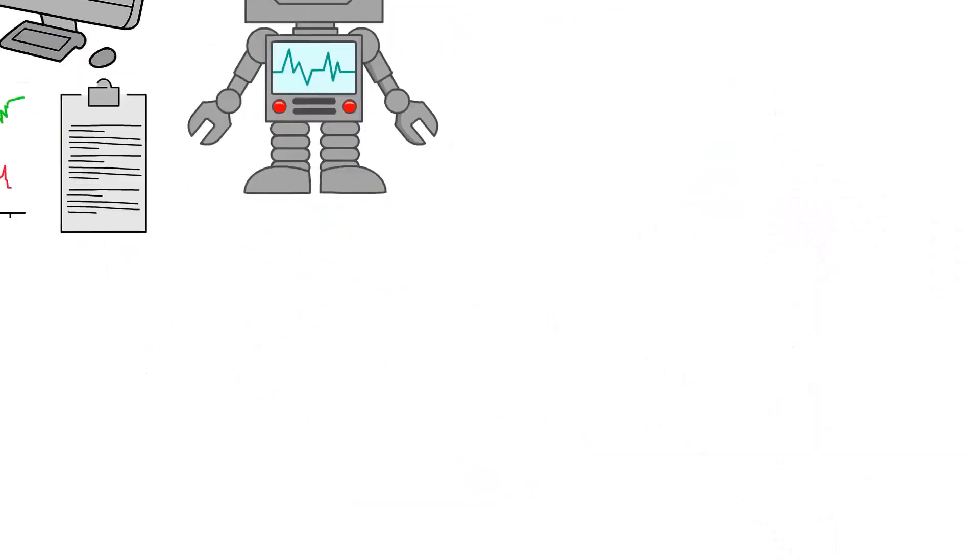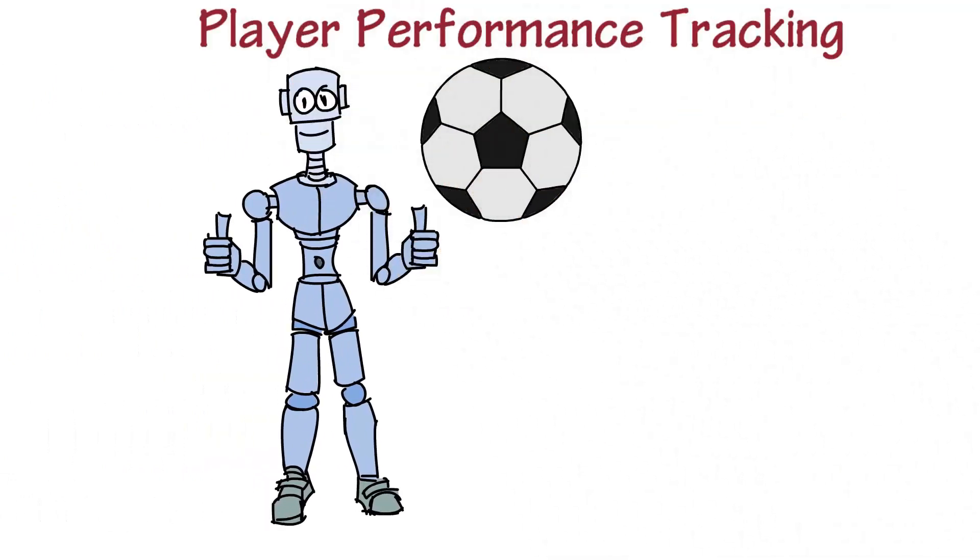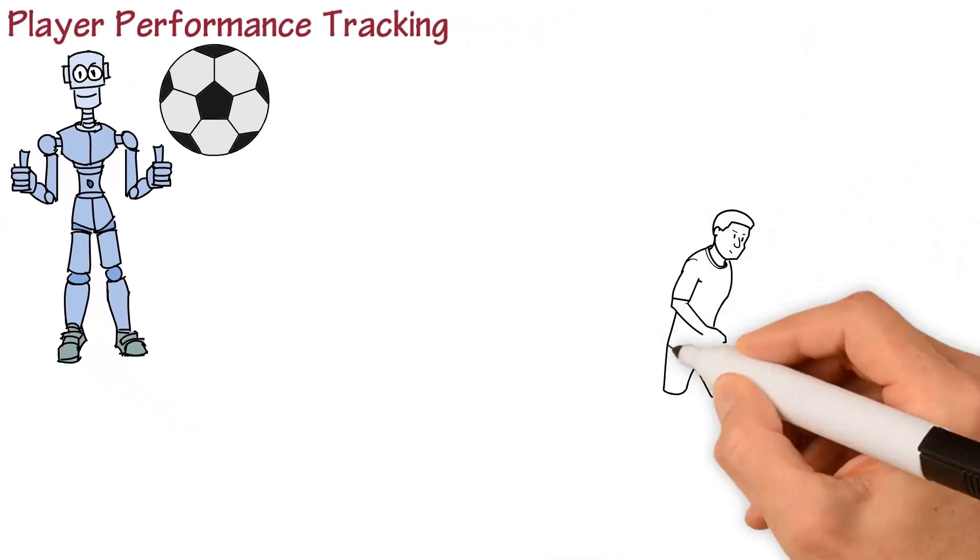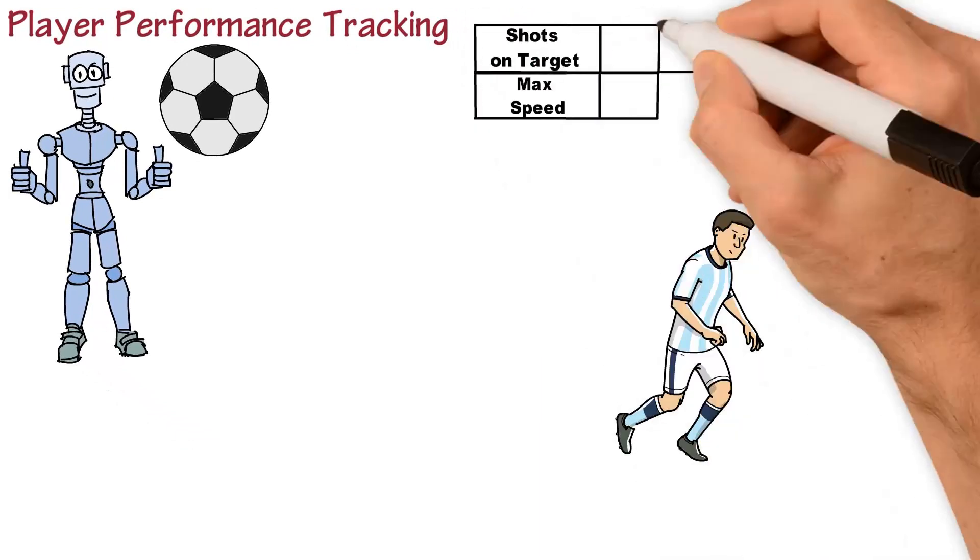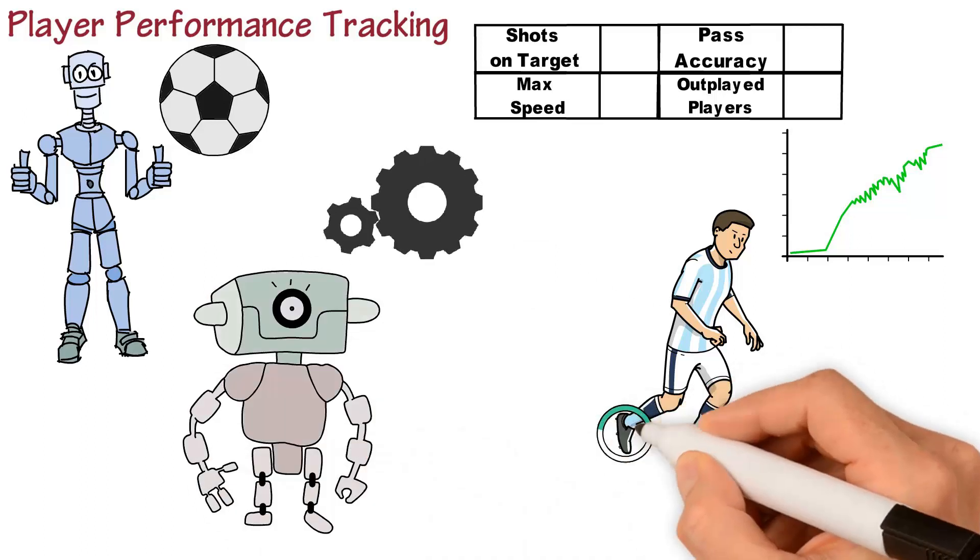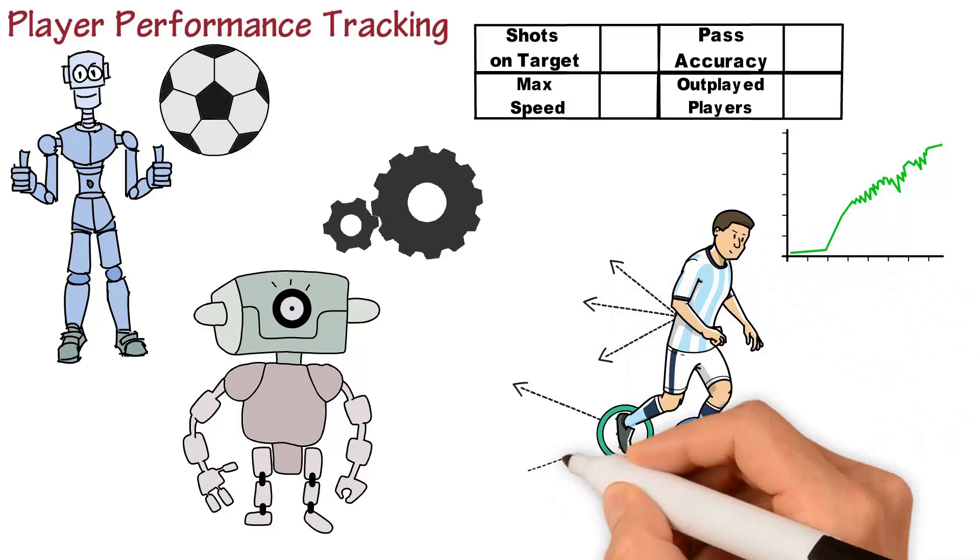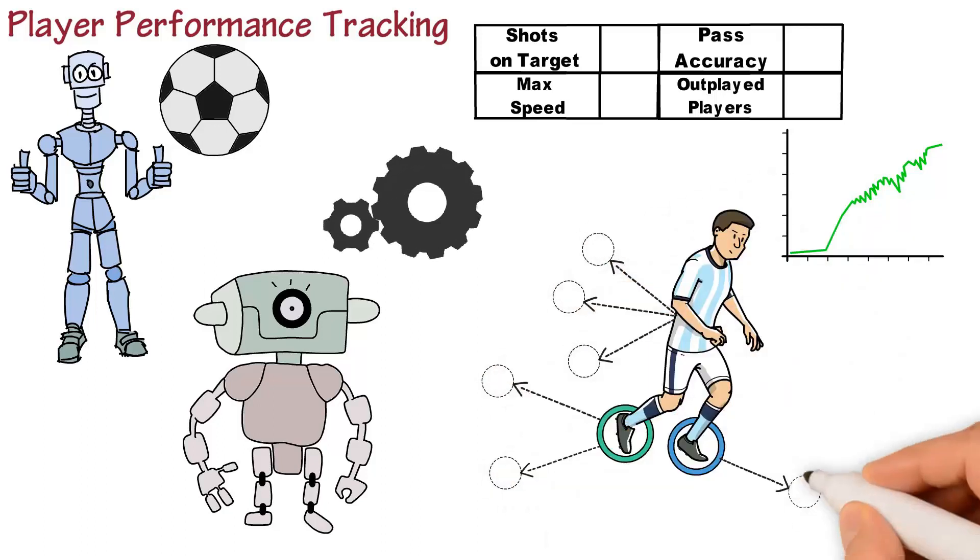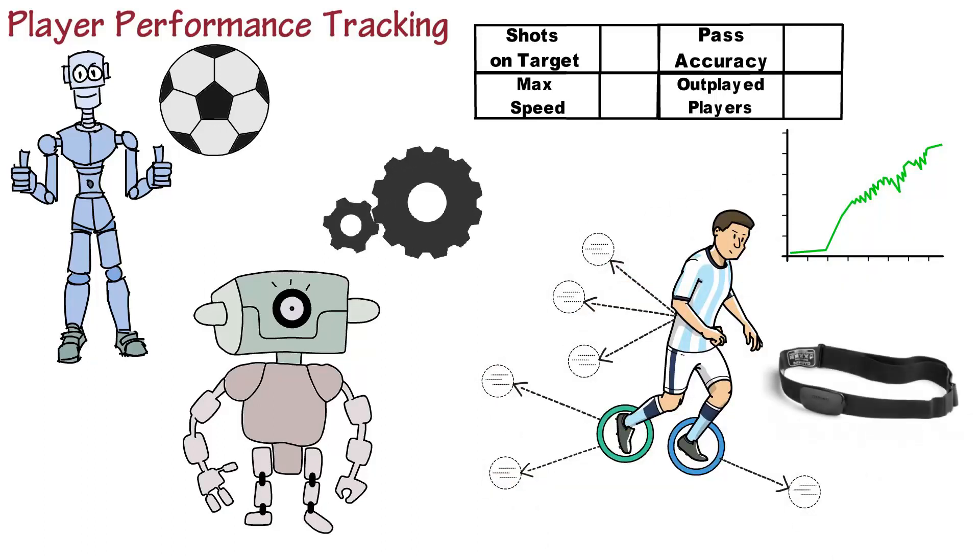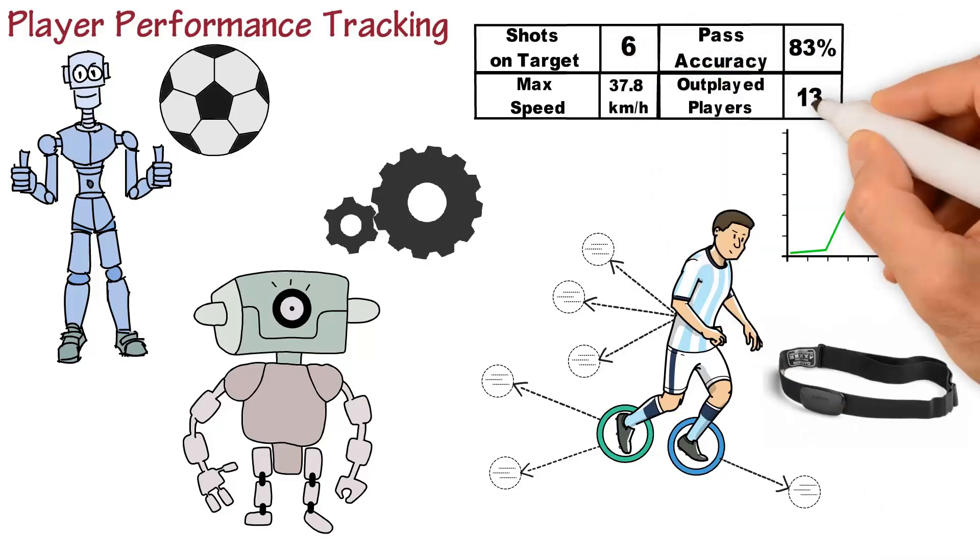Another aspect of soccer where AI is making a significant impact is player performance tracking. Teams need to monitor player performance to identify areas for improvement and optimize player development. AI algorithms automate this process by providing real-time insights into player fitness, form, and skill based on data collected from wearable devices such as heart rate monitors. This information helps teams target their training programs and improve player performance.